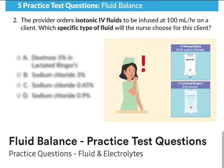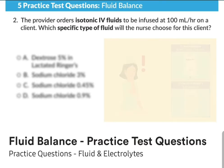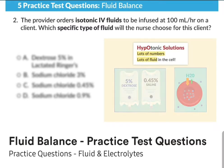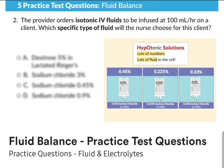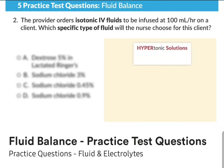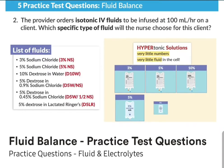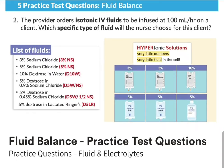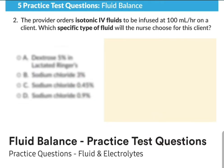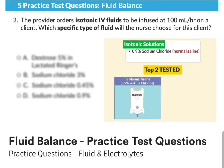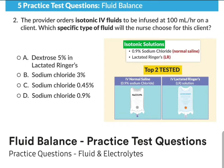If you know the other solutions, it could be easier. Hypotonic solutions have lots of numbers — 0.45, 0.225, and 0.33 — so lots of fluid inside the cell. On the other side, hypertonic solutions have very little numbers — a bunch of 3s, 10s, 5s — so very little fluid inside the cell. But the key takeaway: isotonic solutions are 0.9% sodium chloride, normal saline, and lactated Ringers.